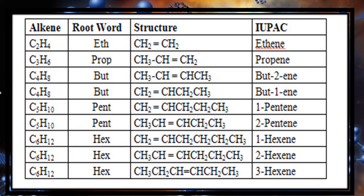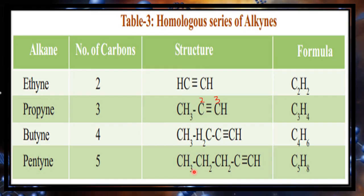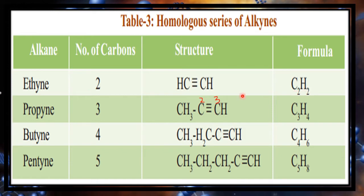The next homologous series is alkynes. The general formula is CnH2n−2. The first member is ethyne: it has two carbons and a triple bond between the carbon atoms, so the suffix '-yne' is used. Its molecular formula is C2H2.